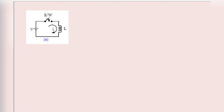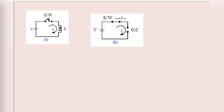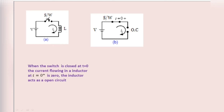Here is the inductor, connected in series with the DC power supply through a switch. When the switch is closed at t=0, the inductor acts as an open switch. The current flow through the inductor at t=0⁺ is zero, because at that instant current rises very slowly.